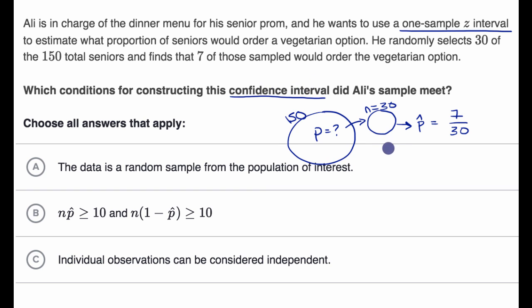The first thing is, we have to be confident that is this a random sample? So that would be the random condition. And that's what choice A is telling us. The data is a random sample from the population of interest. Do we know that? Well, it tells us in the passage here, he randomly selects 30 of the total seniors. So I guess we'll take their word for it. We don't know his methodology of what he considers random, but we'll take their word for it that yes, this has been met. The data is a random sample.